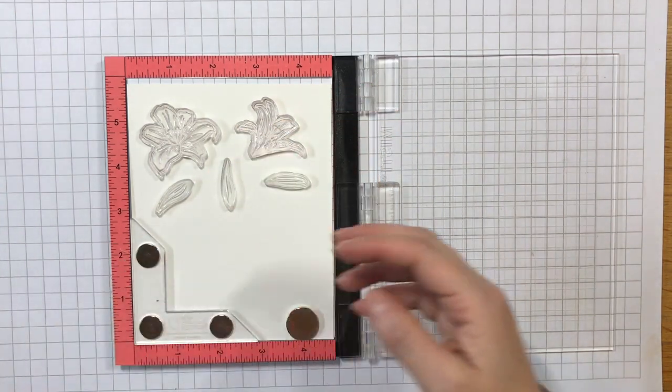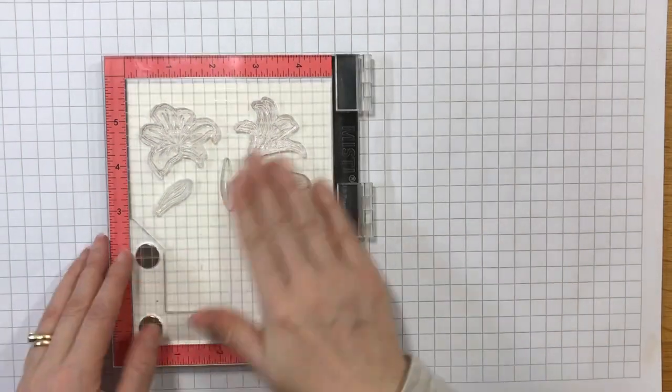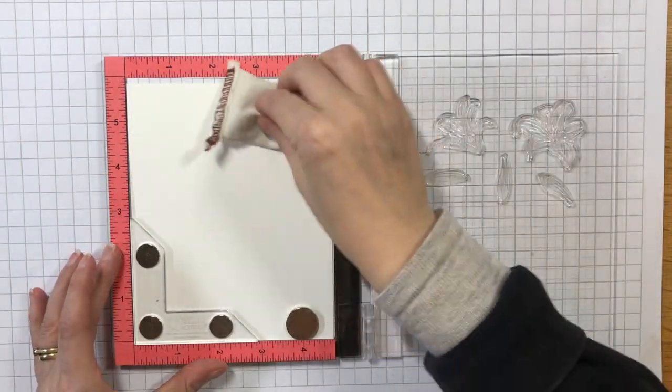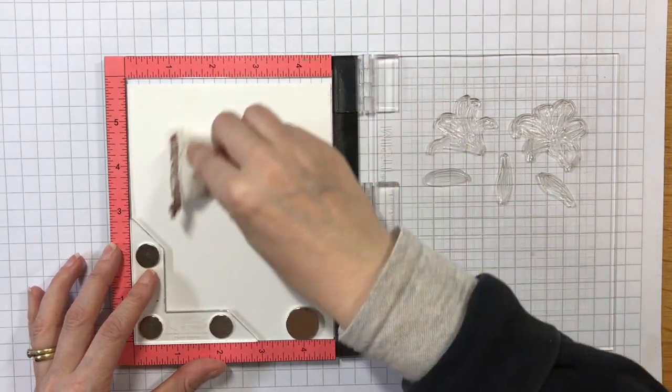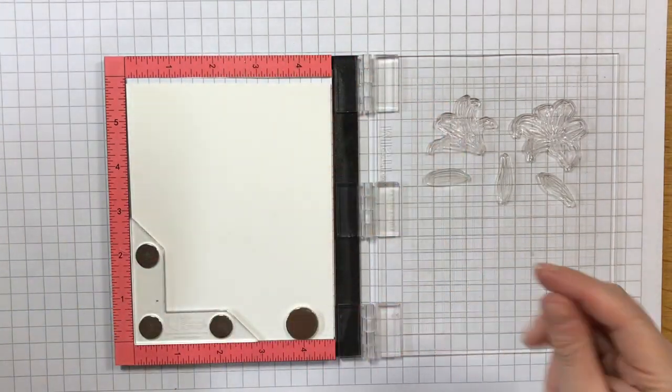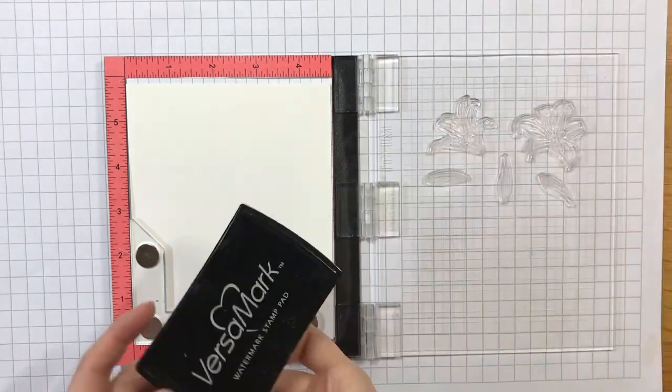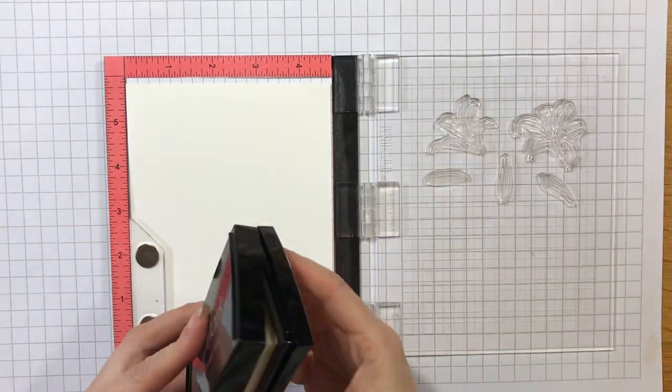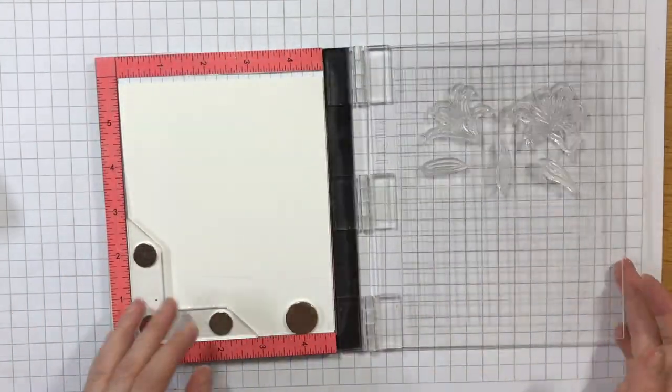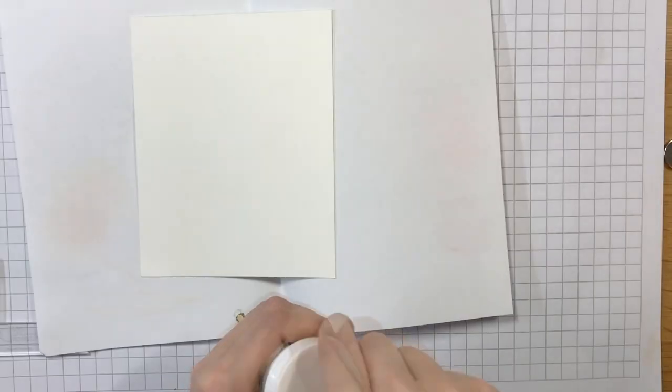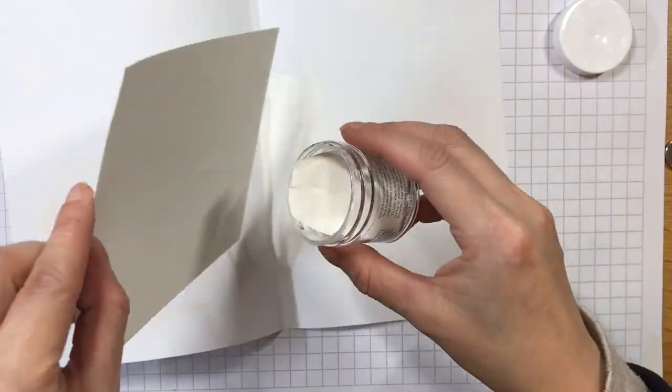I want to create a cluster of flowers around my frame, so I'm stamping the individual images onto watercolor cardstock using Versamark ink. I'm arranging them on my MISTI so that I can stamp them, then turn the paper 180 degrees and stamp them again. I'm heat embossing the images using Avery Elle fine white embossing powder, so it helps to run an anti-static powder tool over the paper if you have one to help keep the embossing where you want it.